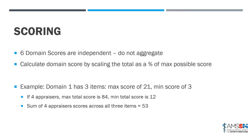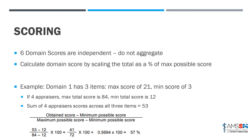If you have four appraisers doing the review, the maximum total score is 84 (21 times four appraisers) and the minimum total score is 12 (three times four). So you sum all four appraisers' scores across all three items — let's say that comes to 53 for our hypothetical guideline. The formula is: obtained score minus minimum possible score, divided by maximum possible score minus minimum possible score. That scales it to a percentage. In this hypothetical scenario, the final domain score would be 57%.